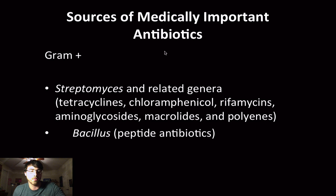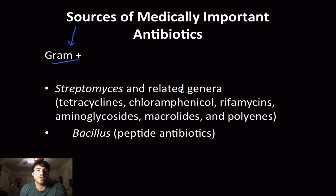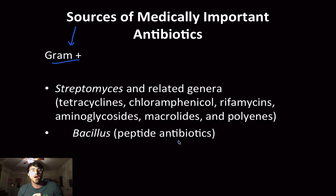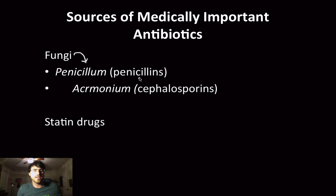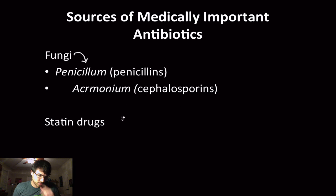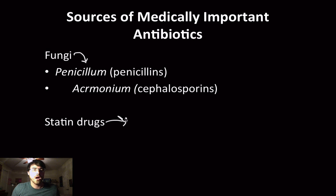Some sources of medically important antibiotics include gram-positive bacteria — specifically Streptomyces and related genera, which give us tetracyclines, chloramphenicol, rifamycins, aminoglycosides, macrolids, and polyenes. Bacillus also provides many peptide-based antibiotics. Fungi are another source: Penicillium gives us penicillin, and Acremonium is where we get the cephalosporins.